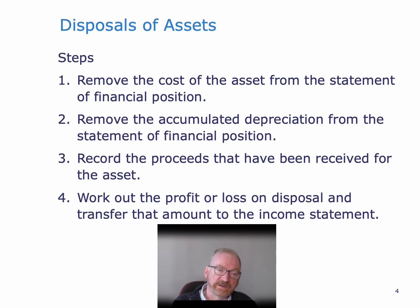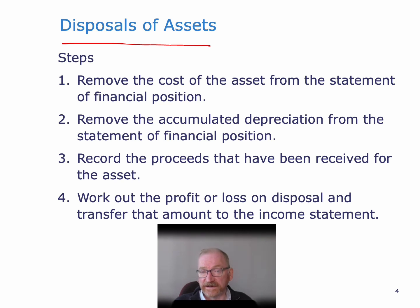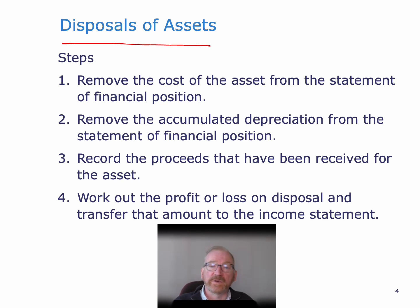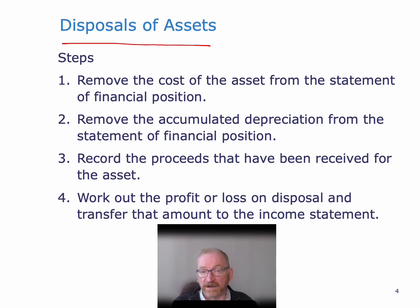Now, disposal of assets is a lot trickier because after a while, an asset is going to have accumulated depreciation against it. Its net book value is going to have gone down, and what we have to do is compare what's on the balance sheet — the net book value — with what we got for the asset, and work out whether we made a profit or loss on disposing of the asset. And we have to do certain entries to sort all this out.